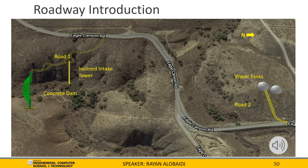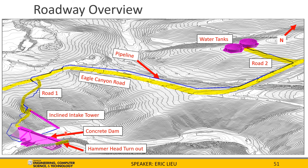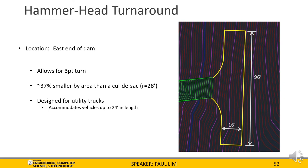For an overview of the roadway design, we'll start with the hammerhead turnout east of the concrete dam, then road 1 including the turnout for the intake tower and retaining wall detailing, and then road 2 connecting Eagle Canyon Road to our tanks. The hammerhead turnaround is located at the east end of the dam, allowing vehicles to turn around using a three-point turn to leave the dam facilities and return to the main road. This design was chosen for its smaller size, being approximately 37% smaller by area when compared to a cul-de-sac with a 28-foot radius. It was sized for utility vehicles but can accommodate vehicles up to 24 feet in length requiring a 28-foot turning radius.